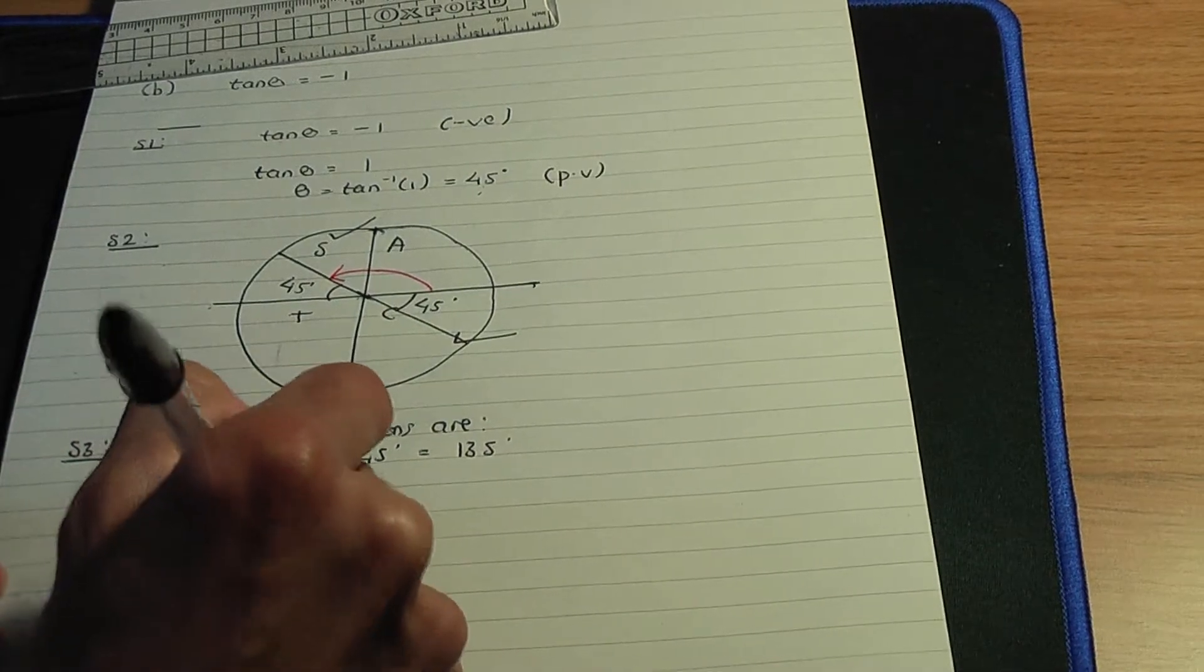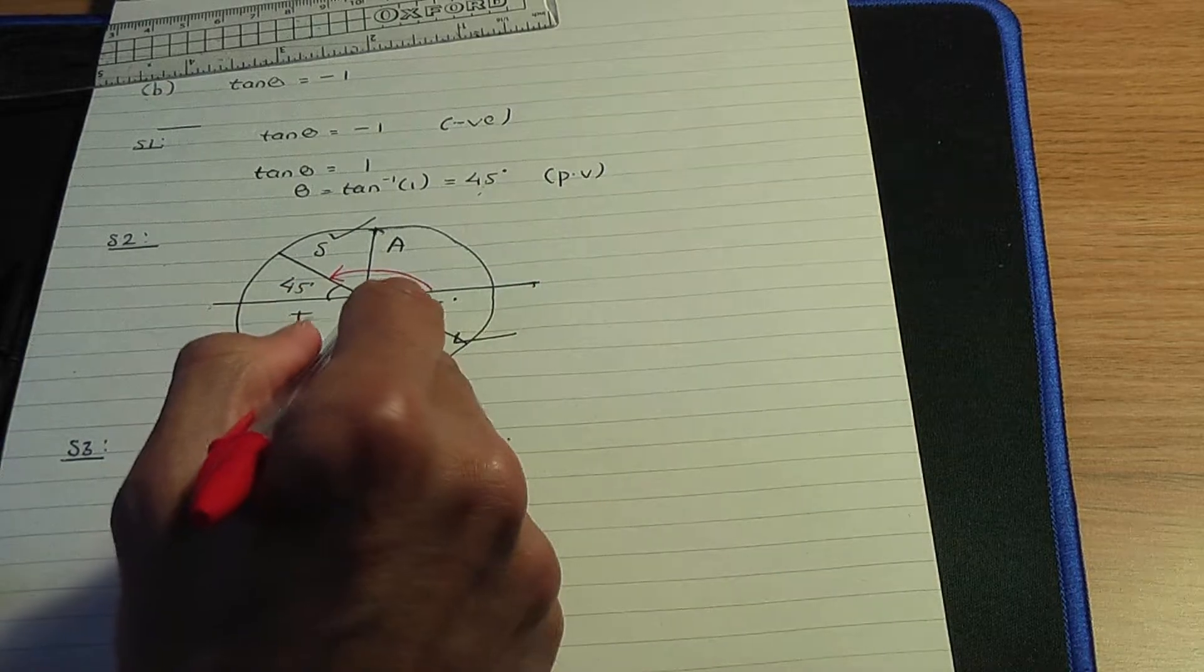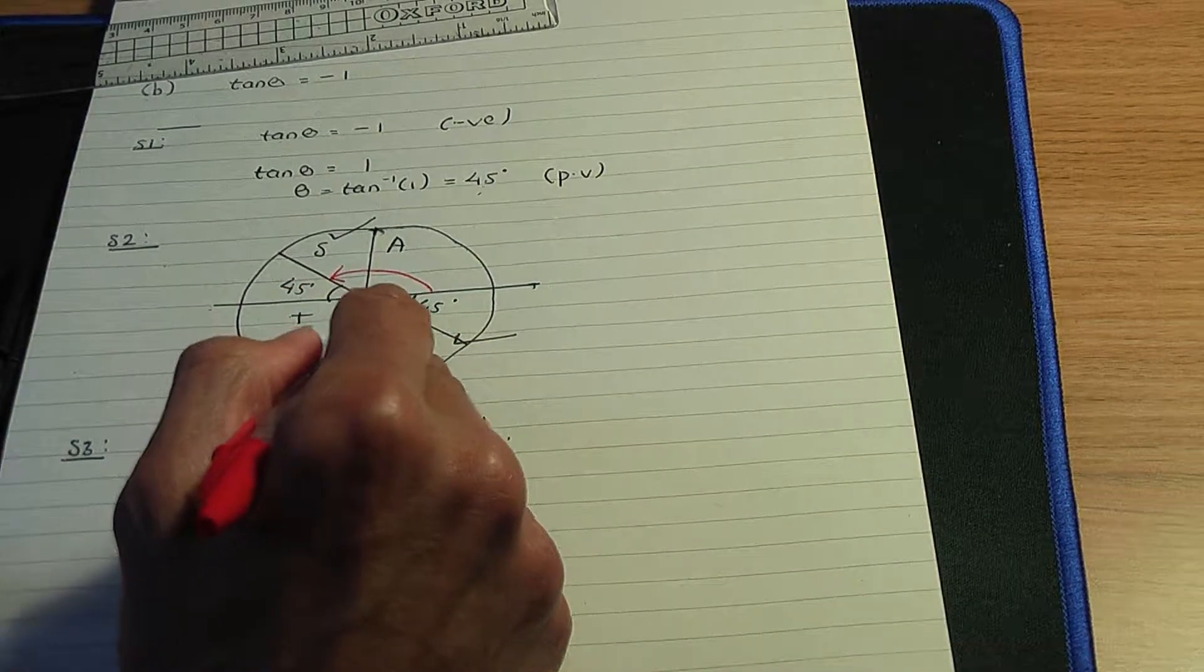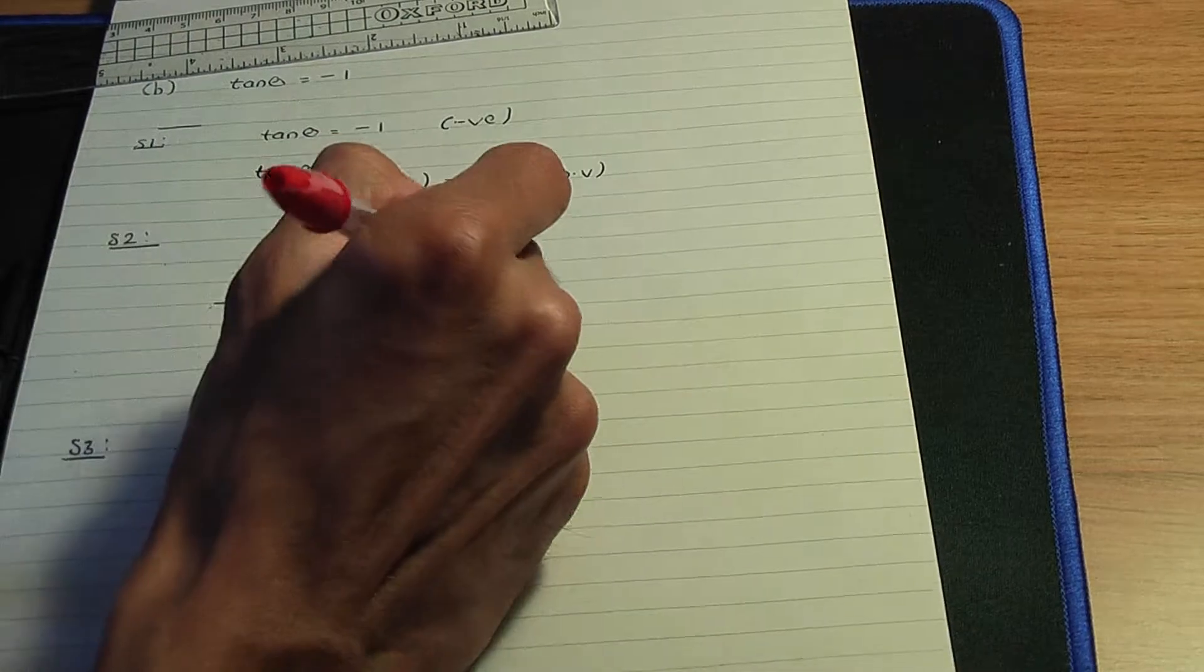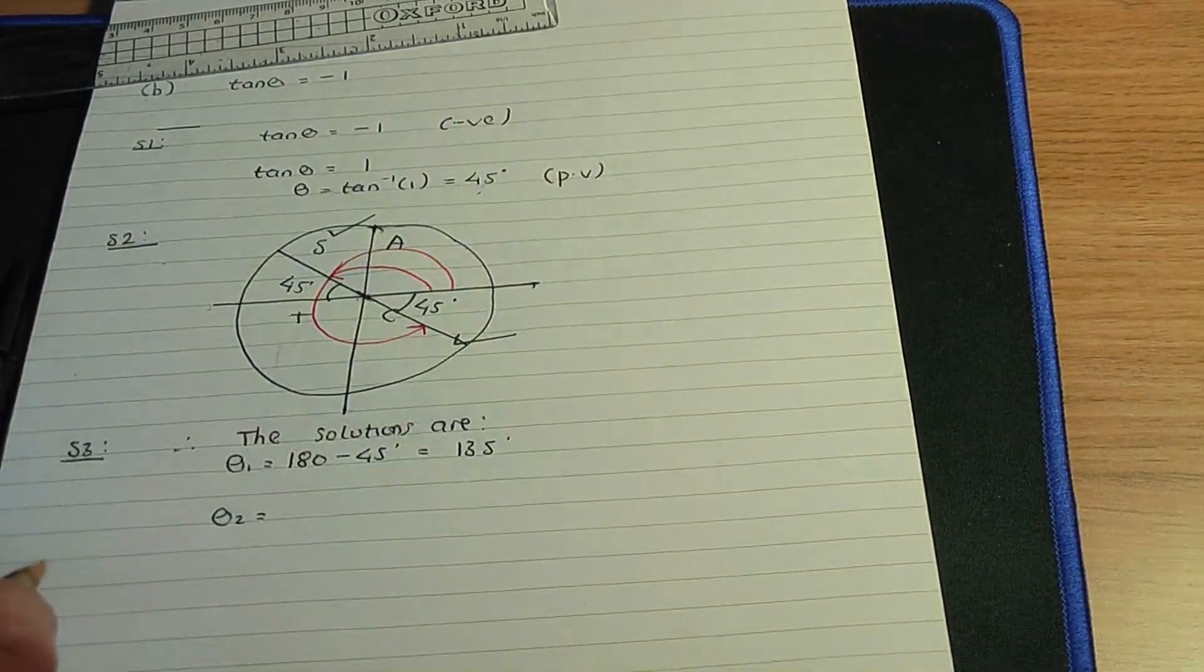And the next solution, theta 2. So again we're measuring positive solutions. So from this initial line in the anticlockwise direction until we hit this line over here.